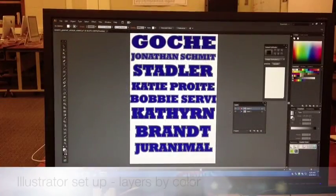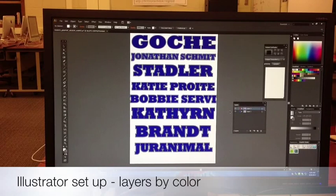Get your file ready to cut on the Roland vinyl cutter. The first thing you're going to do is open your file and go to Illustrator. In this case, we have some names that are going on the back of some t-shirts, and they've been designed in a two-color format.